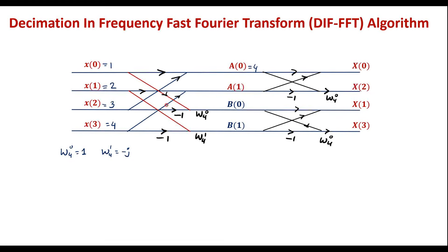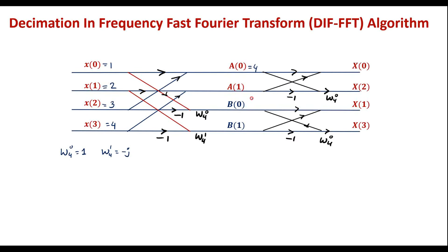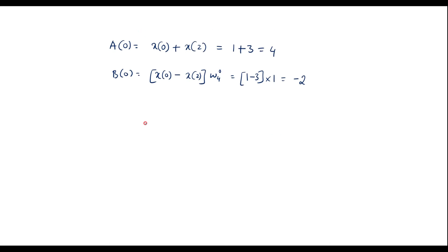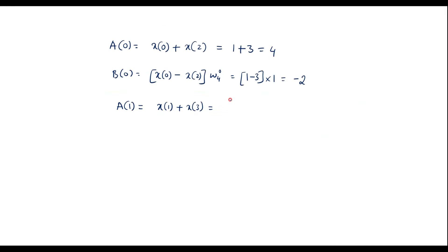B(0) = (x(0) - x(2)) · W4^0 = (1 - 3) · 1 = -2. So B(0) = -2. A(1) = x(1) + x(3) = 2 + 4 = 6. So A(1) = 6.